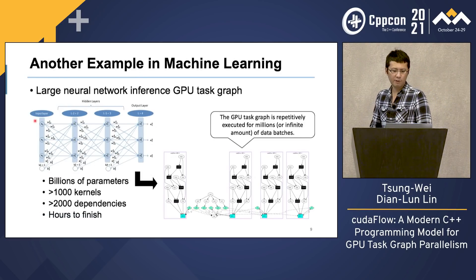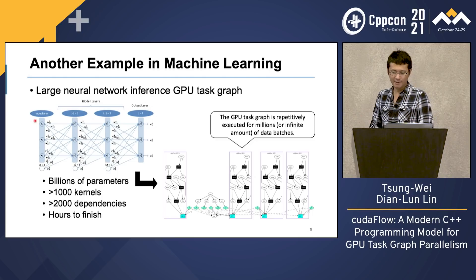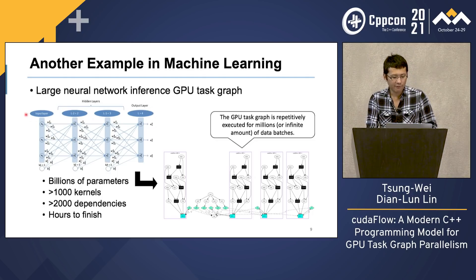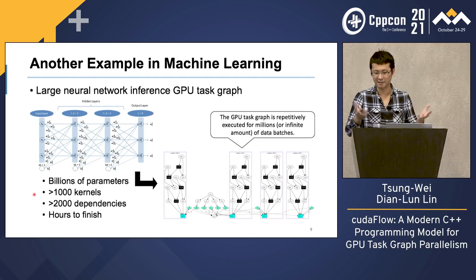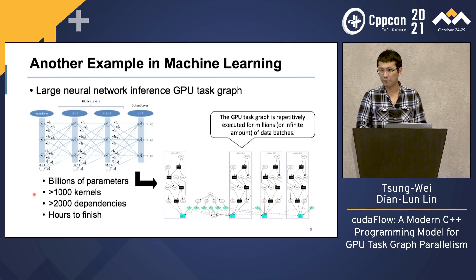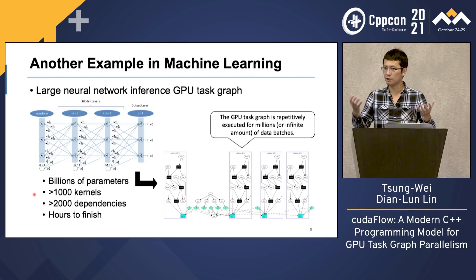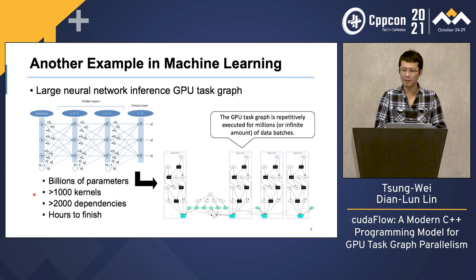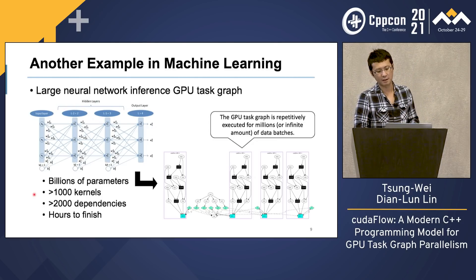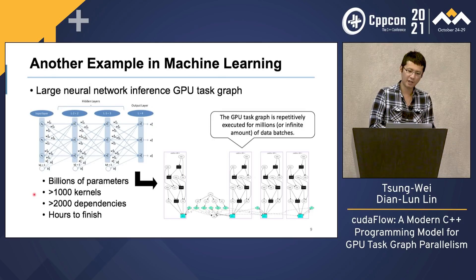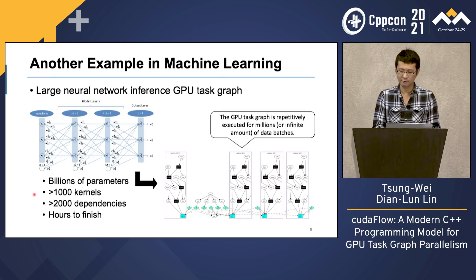Another example in machine learning is running an inference algorithm on large sparse neural networks that have billions of parameters. In this GPU task graph, we have more than 1,000 kernels and 2,000 dependencies, and the inference can take several hours to finish depending on data size. And in most situations, data size is infinite. We know for many machine learning algorithms, once the architecture has been decided, you are not going to modify that architecture anymore — you want to repetitively run the GPU on the same neural network architecture to perform inference across millions of data batches. So the question is: how do we program and run these large GPU task graphs efficiently?